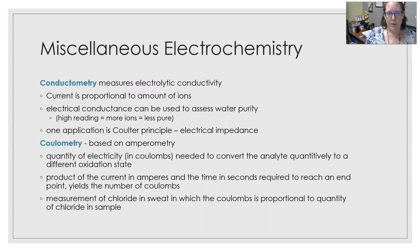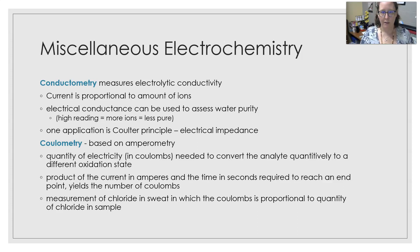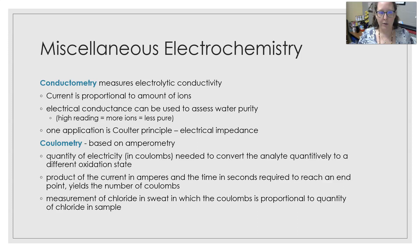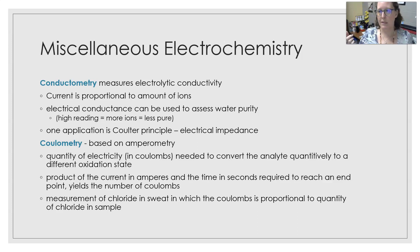Conductometry measures electrolytic conductivity. If a solution can conduct electricity, the current is proportional to the number of ions in that solution. Electrical conductance can be used to assess water purity — you run electric current across a certain width of water, and the higher the reading, the more ions are present and the less pure the water. The more ions there are, the faster and more easily the current can jump from ion to ion across the solution.